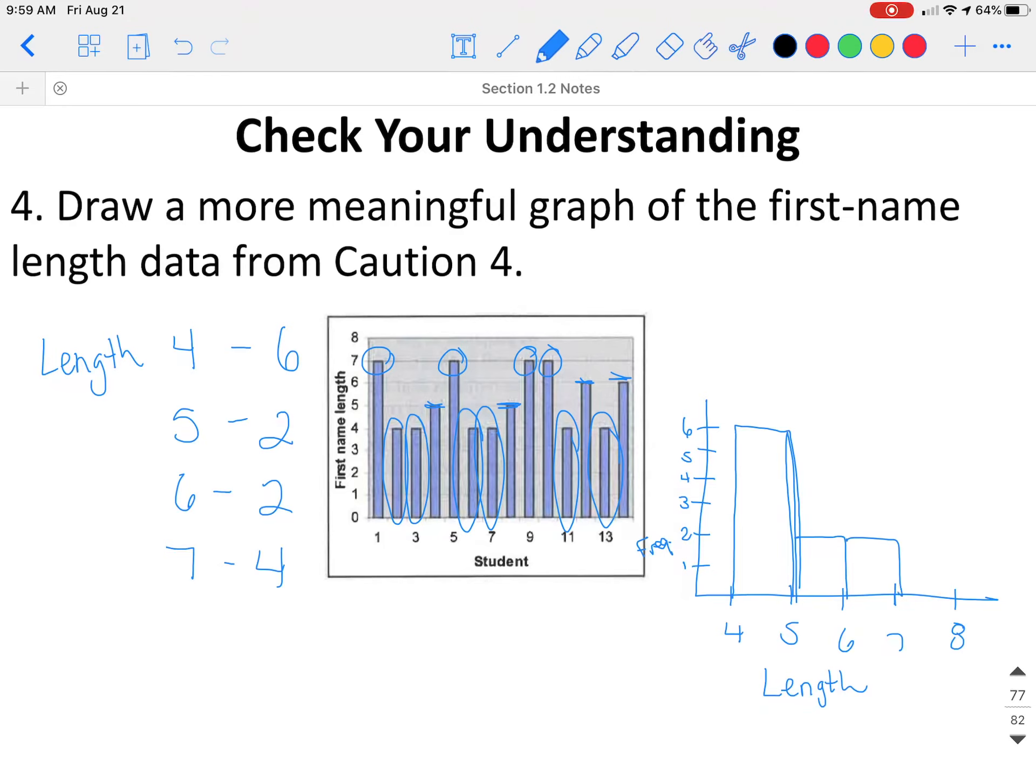From 5 to 6, there are 2. From 6 to 7, there are 2. And from 7 up to 8, there are 4 students. So this graph is much more meaningful. You can definitely tell more students have name length of 4 letters than any other length.